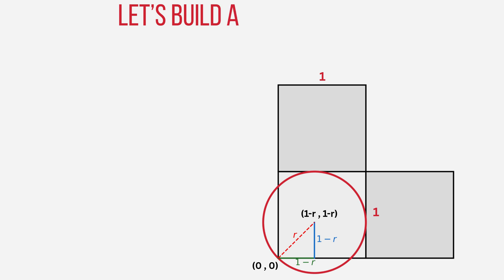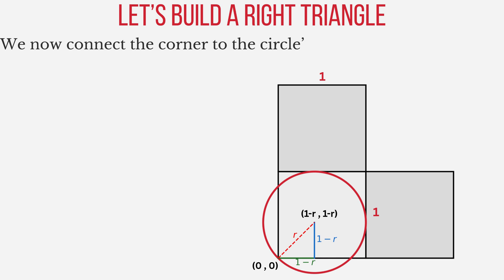Now we draw a right triangle from the corner to the circle center. The vertical and horizontal legs are both 1-R and the hypotenuse. The distance from corner to center is the radius R.